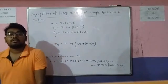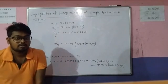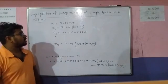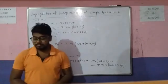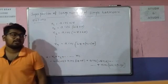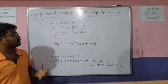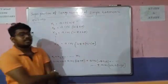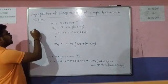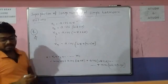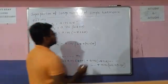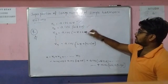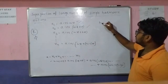Today we will discuss the superposition of a large number of simple harmonic motions. We are taking several simple harmonic motions and finding the resultant after superposition. The result of simple harmonic motion has some amplitude, and we need to find the final phase.